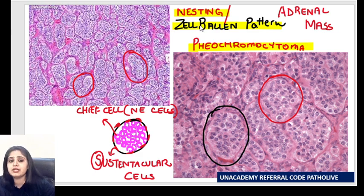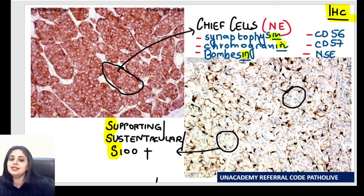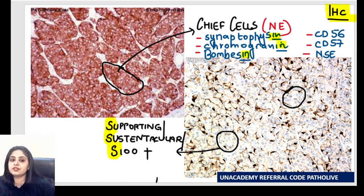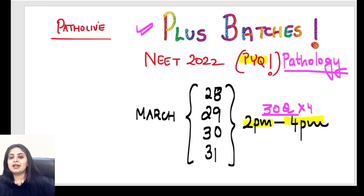Although the number of spotters we discussed today were fewer, I hope the most frequently asked queries on Giardia lamblia and pheochromocytoma immunohistochemistry are now sorted. Thank you so much for joining in. See you tomorrow in another spotter session at 9 o'clock, and also in the Plus batch starting at 2 PM with the first set of 30 PYQ questions. Thank you, all the best, and good night.